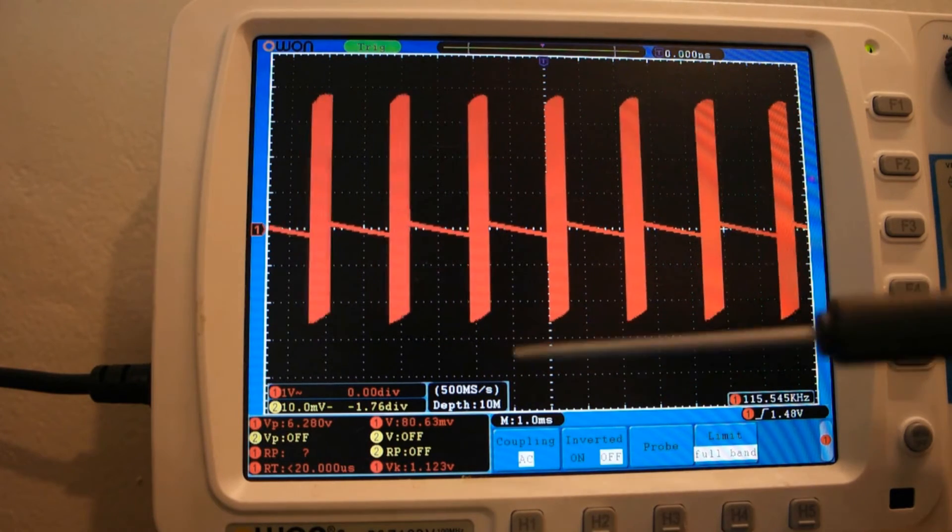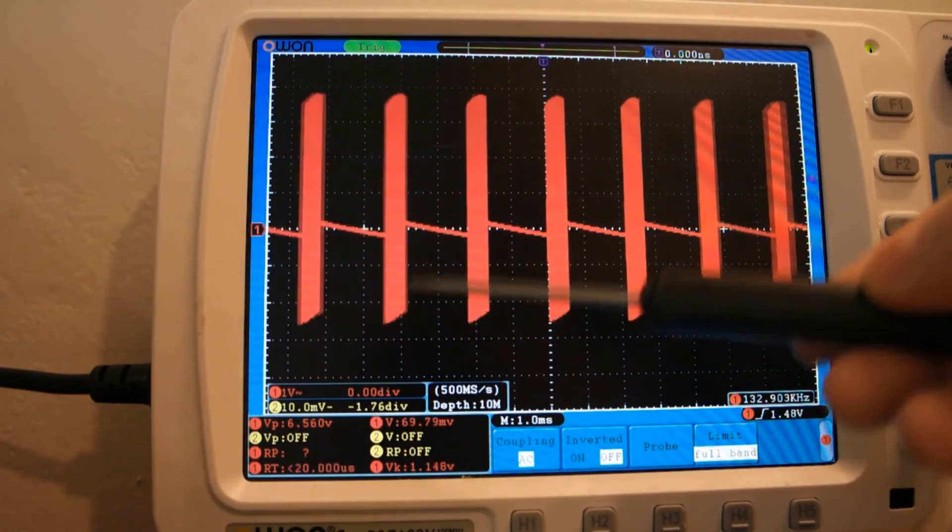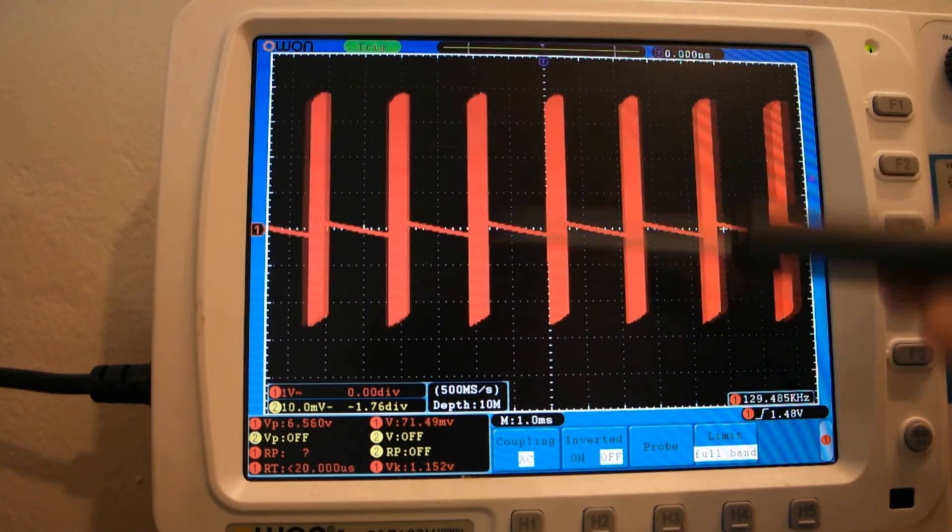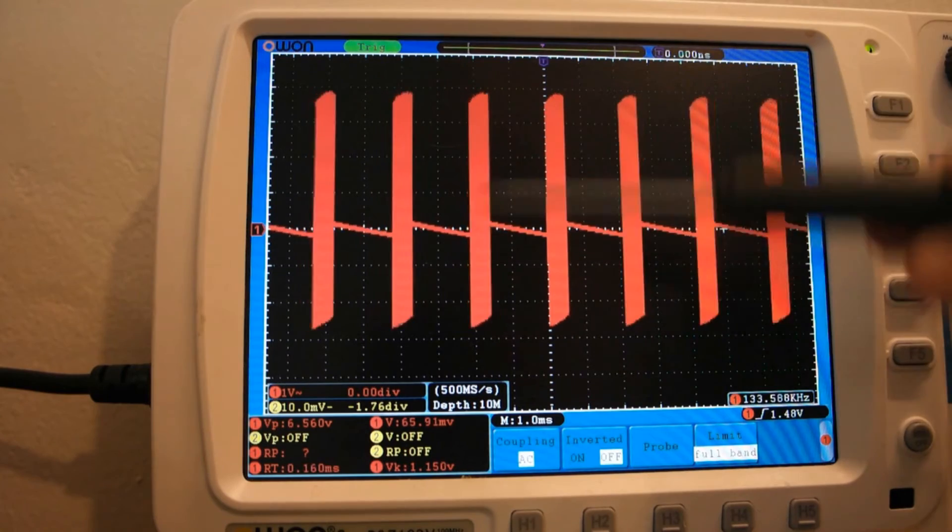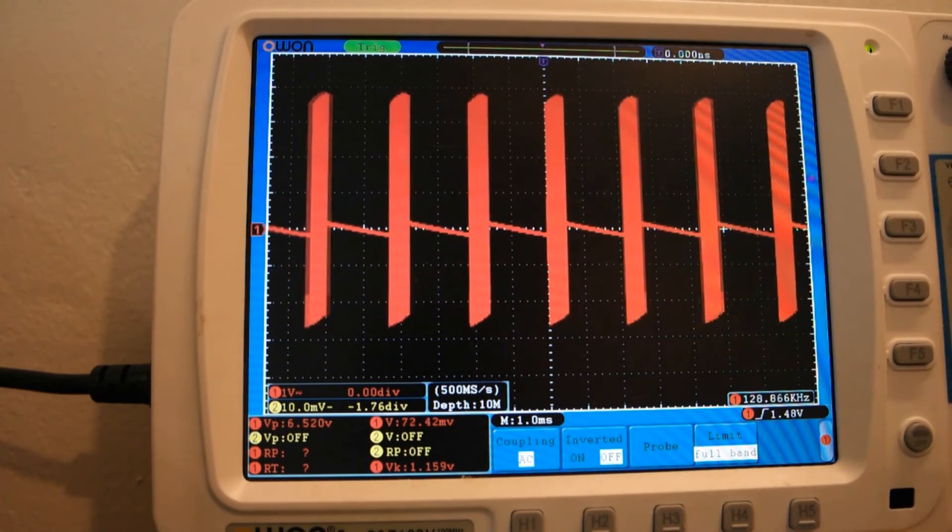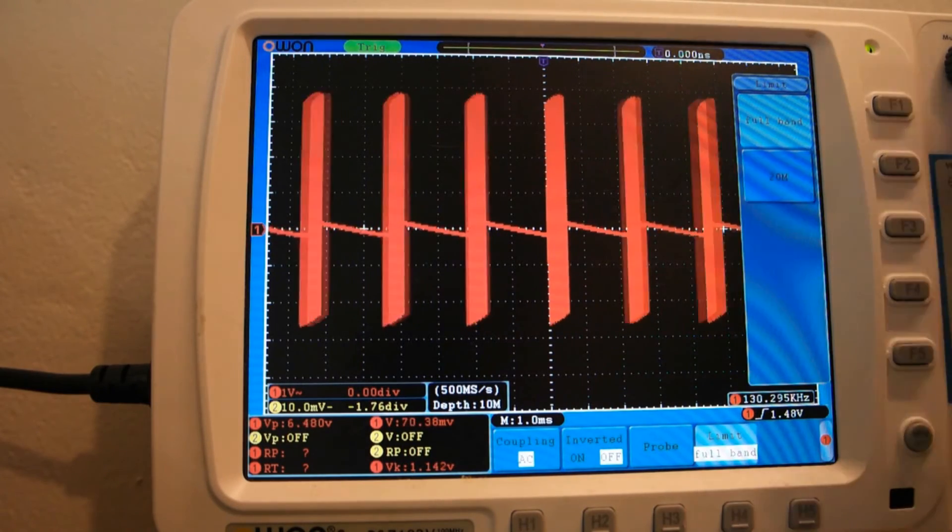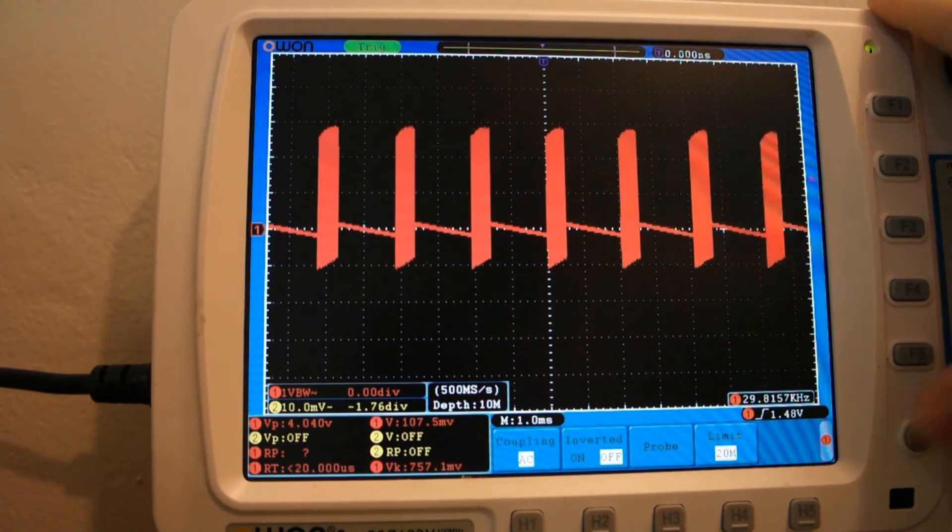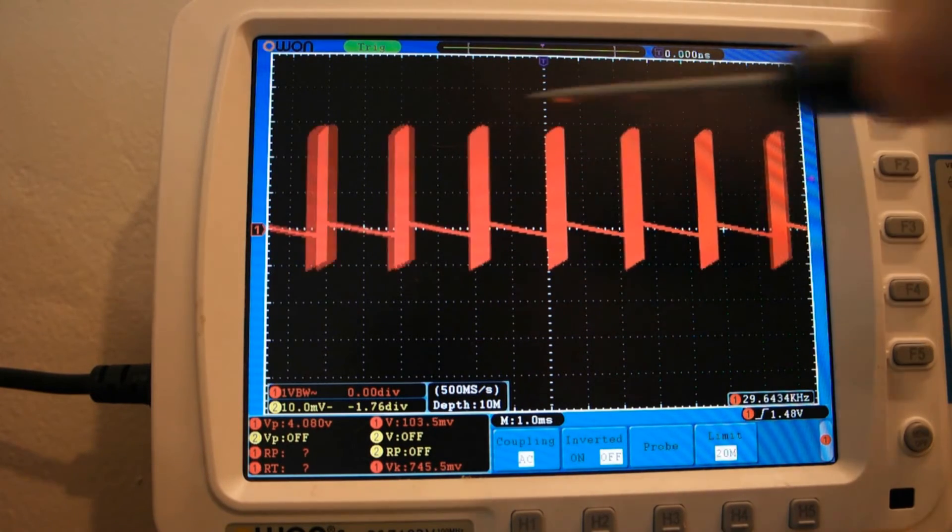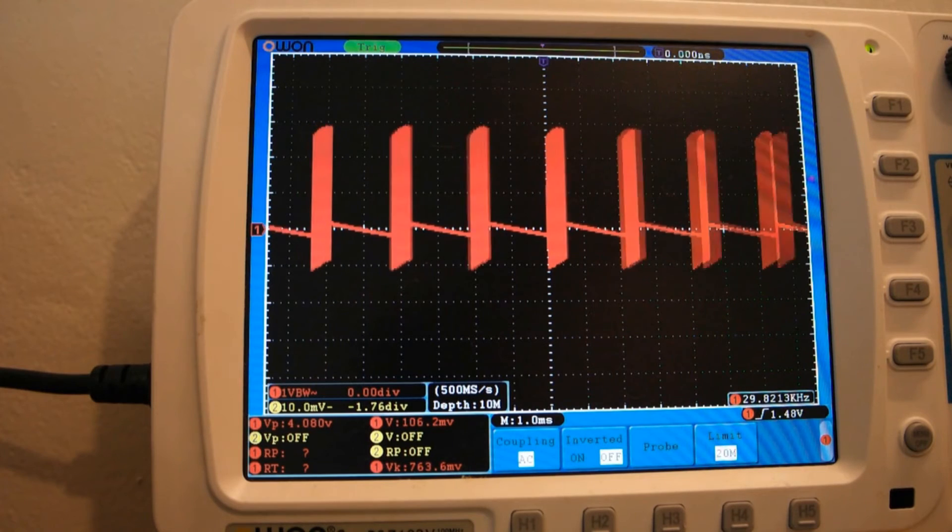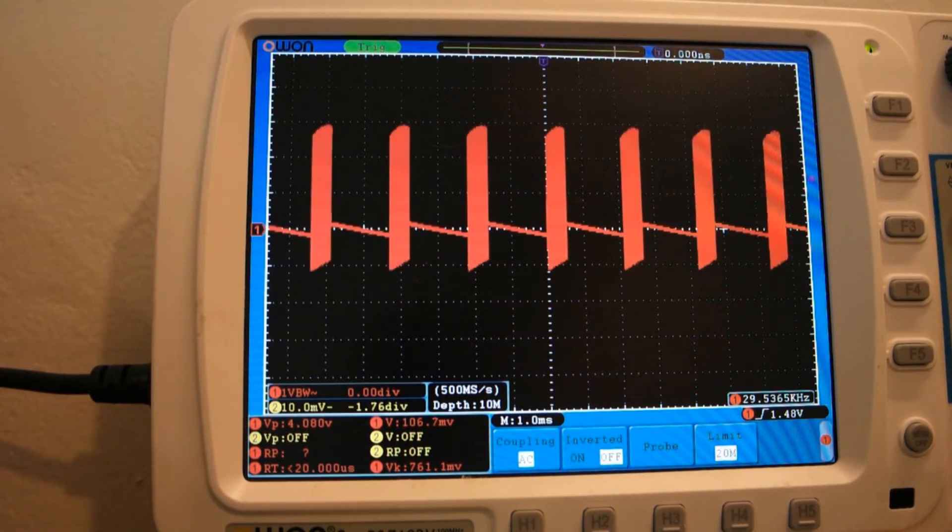Here on the scope we can see one volt per division. AC coupled. And we can see there's quite a lot of noise coming in here. This is on full bandwidth. We can try limit it to 20 megahertz. It might look a little bit better. But still, it's one, two, three, four volts ripple here. It's quite significant.